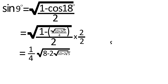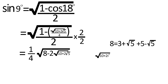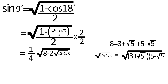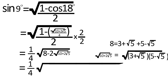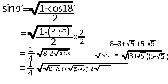We can write 8 as (3 + √5) + (5 − √5), and √(10 + 2√5) as √((3 + √5)(5 − √5)). So sin 9° = (1/4)√((√(3 + √5))² + (√(5 − √5))² − 2√((3 + √5)(5 − √5))).